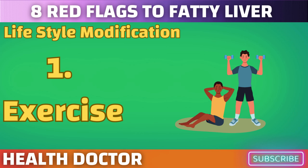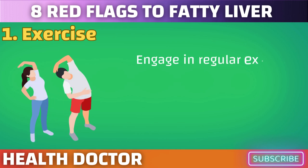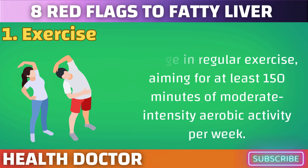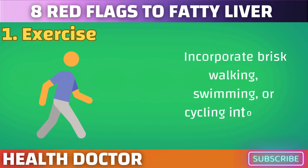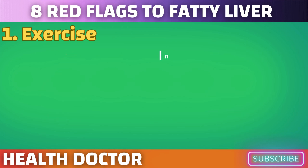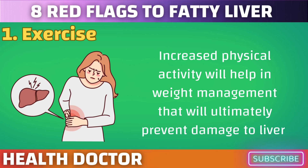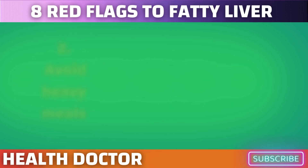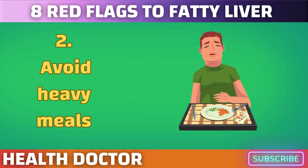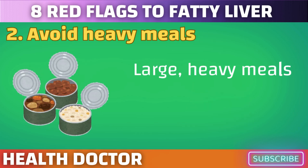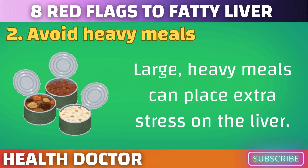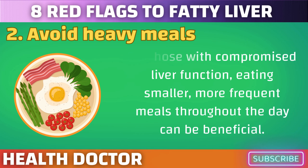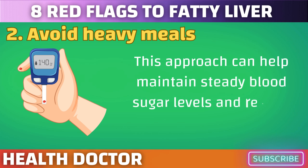Lifestyle modifications can enhance the liver's regenerative capabilities and prevent or delay the progression of liver disease. Engage in regular exercise, aiming for at least 150 minutes of moderate-intensity aerobic activity per week. Incorporate brisk walking, swimming, or cycling into your routine. Increased physical activity will help with weight management, which will ultimately prevent liver damage since high cholesterol and blood pressure emerge from obesity. Additionally, large, heavy meals can place extra stress on the liver. Eating smaller, more frequent meals throughout the day can help maintain steady blood sugar levels and reduce the burden on the liver.